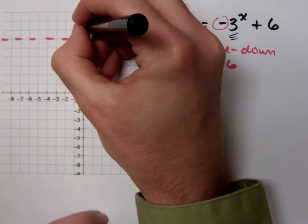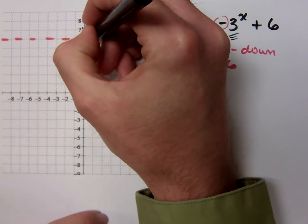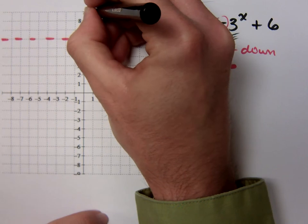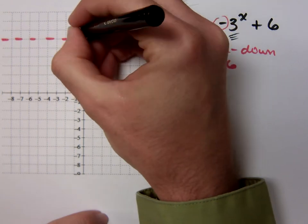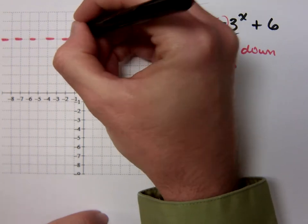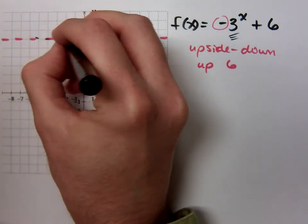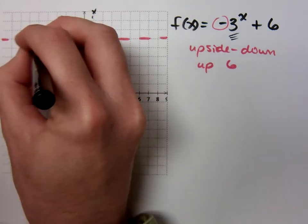Then I would have my key points here at 0, 1. 1 comma the base, the base here being 3. So it would be 1, 3. If I go the other way, negative 1 would give me 1, 3. So this is what my guy would look like right there.